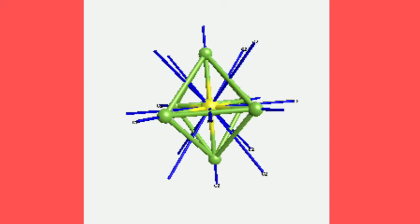From another viewpoint, you can see how each C2 axis passes through the midpoint of opposite edges at 90 degree angles.